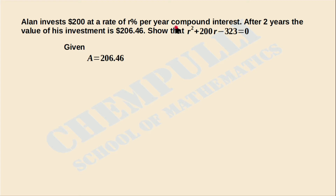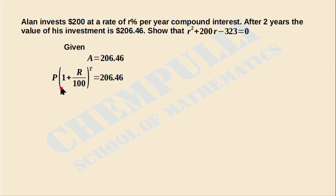It is a compound interest problem. In compound interest, we know the formula to find the amount: Amount = P × (1 + R/100)^T, where P represents the principal value, R represents the rate of interest, and T represents the time duration in years.